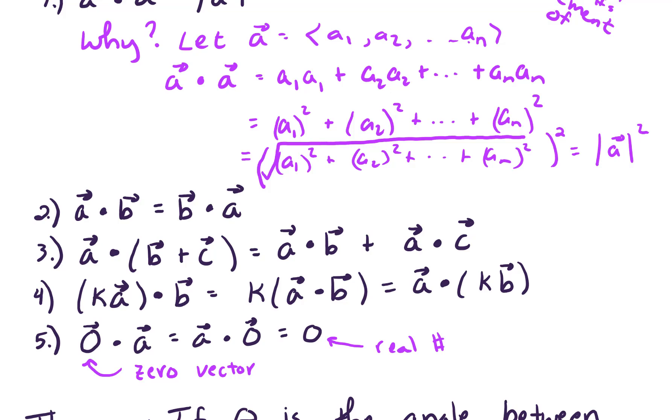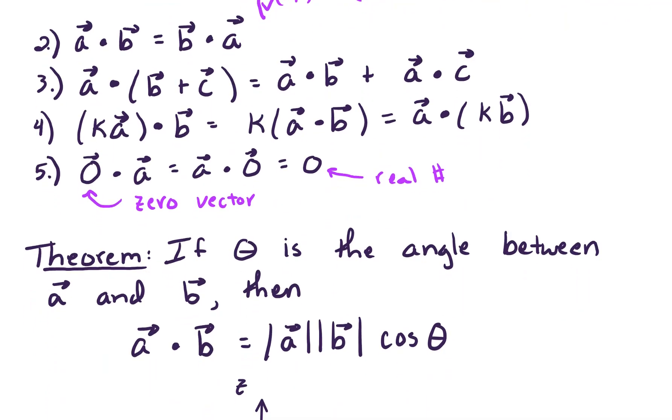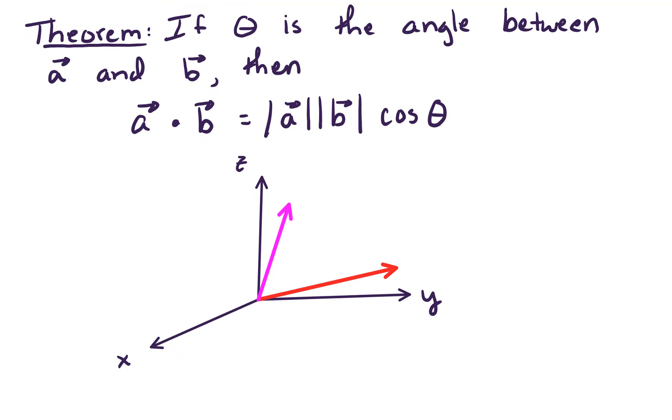Okay, we're ready for a theorem, our first theorem. So this theorem says that if theta is the angle between vector a and vector b, then the dot product a dot b equals the magnitude of a times the magnitude of b times cosine of theta.